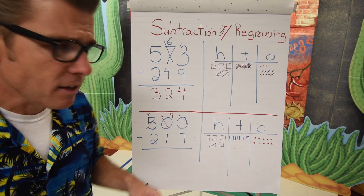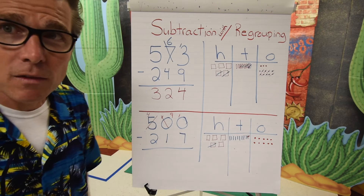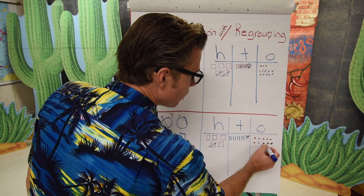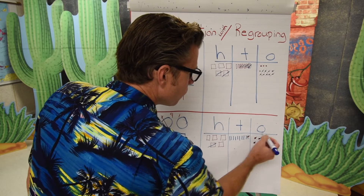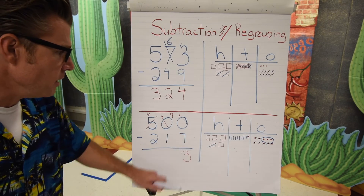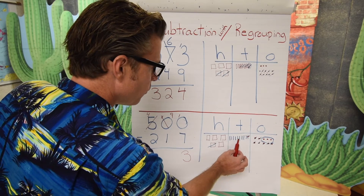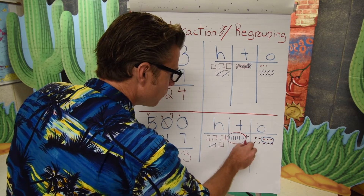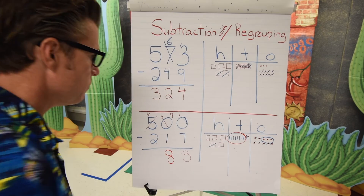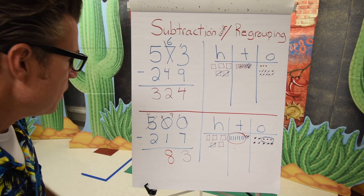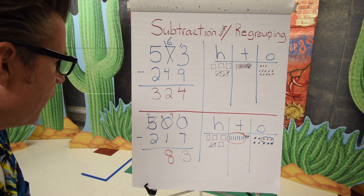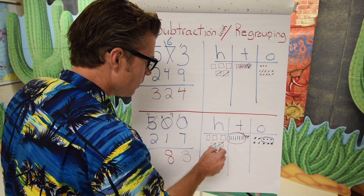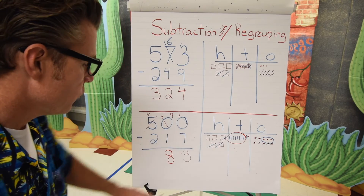Every place now has a value, so let's see if we can make this work. We're taking seven away from ten, leaving three. Seven from ten is three. Moving to the tens, we have nine tens and we're taking one away, leaving eight. Done with ones, done with tens — looking at the hundreds, we have four hundreds and we're taking two away, leaving two. The answer is two hundred and eighty-three.